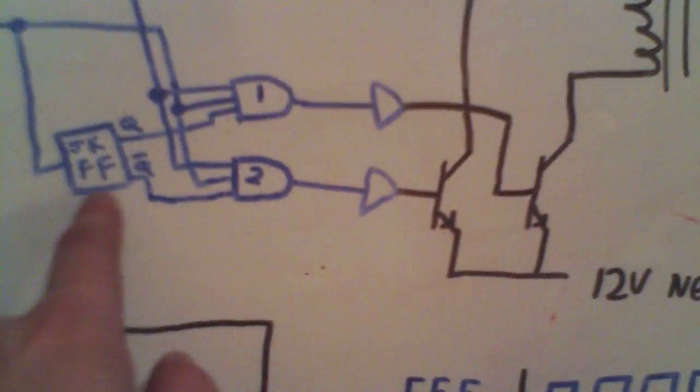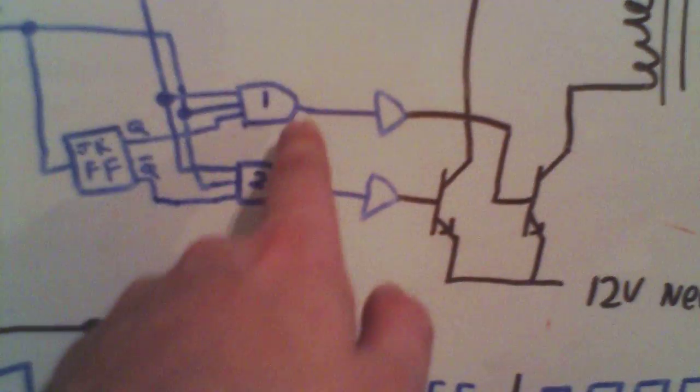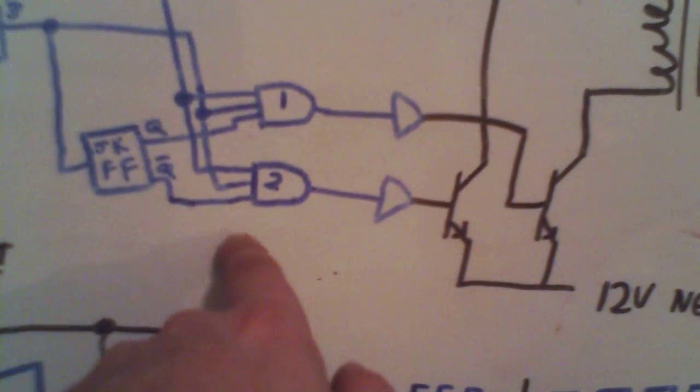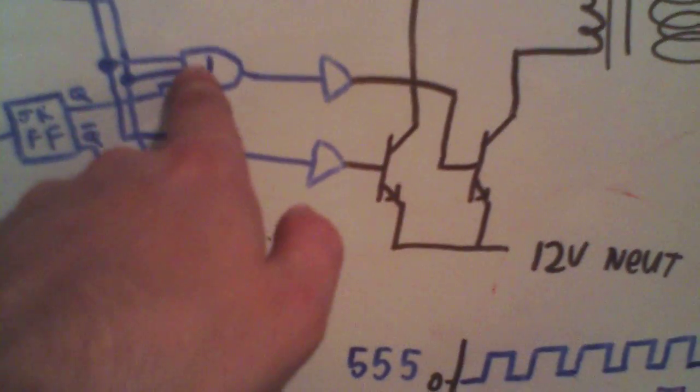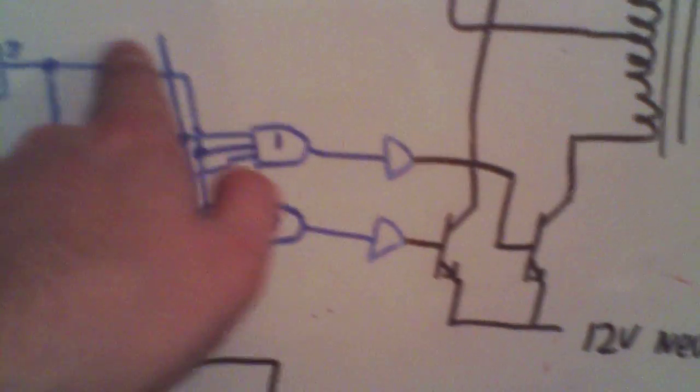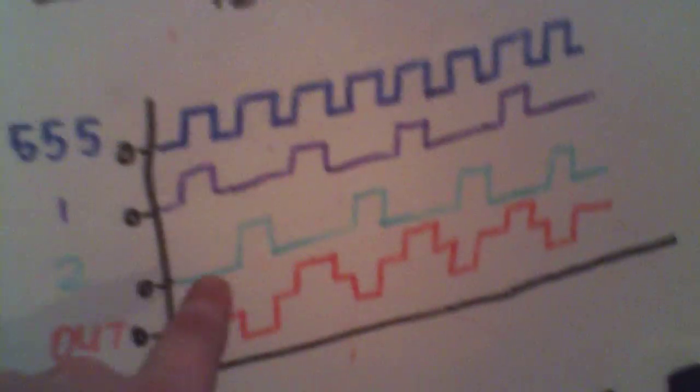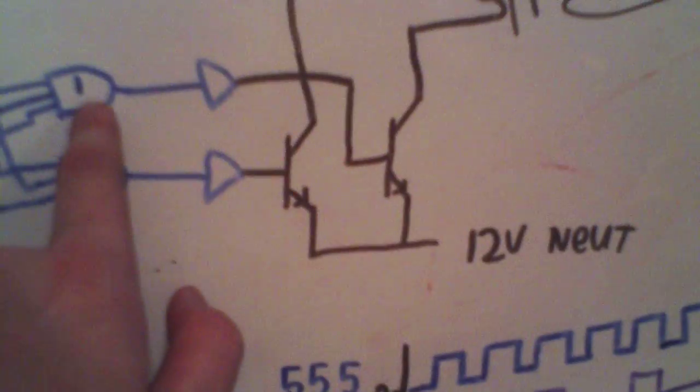And then the AND gates, one is connected to the Q output from the flip-flop, the other one is connected to the not Q, as well as each one is going to have an input from the 555 clock. And so pretty much each one will alternately, each AND gate will output a high alternately on each clock pulse.